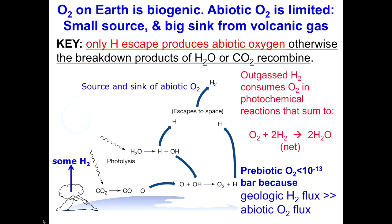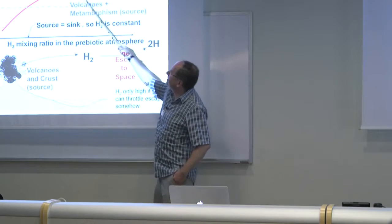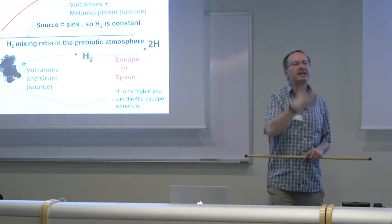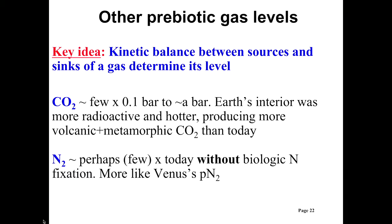For prebiotic hydrogen levels, we have some escape to space — which depends on how much hydrogen is in the atmosphere — and some rate of input from volcanoes. Where they cross is the solution to the hydrogen level. The answer is something small, like maybe one percent, which argues against a Miller-Urey atmosphere with tens of percent of hydrogen and ammonia. For CO2, this kinetic balance gives something like 0.1 bar to a bar on the early Earth in the late Hadean and early Archean.